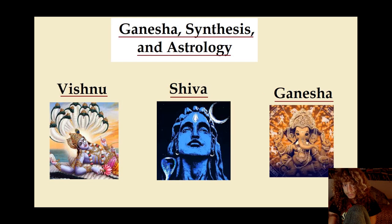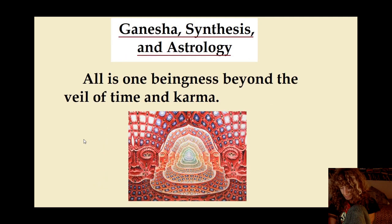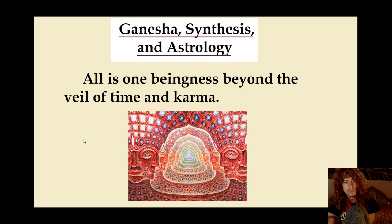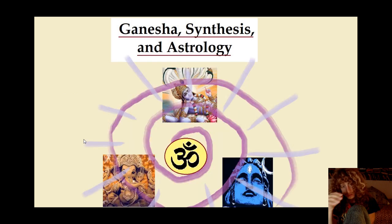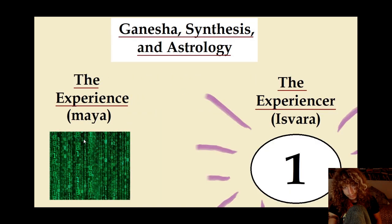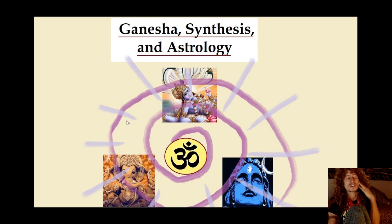That's why we have so many names for the experiencer — God, the eternal self. Each God represents a different circuit breaker back to the infinite. They're all one; all is one beingness beyond the veil of time and karma. So Vishnu, Ganesha, Shiva — they all represent different power mantras that ground us in eternity, in truth, in reality. But they do it in different ways because we're all entangled. All these different gods are different ways of grounding us back in the eternal.